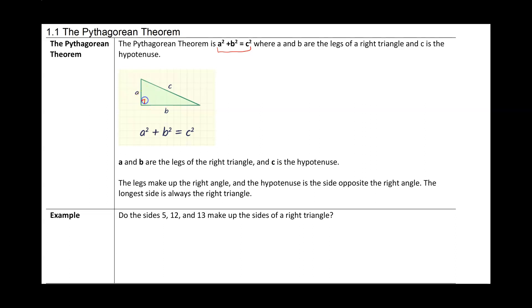The two sides that make up the right angle are the legs. So this right angle is made up by sides a and b — therefore a and b are the legs, and c is the hypotenuse. The hypotenuse is always going to be across from the right angle.